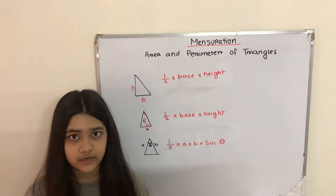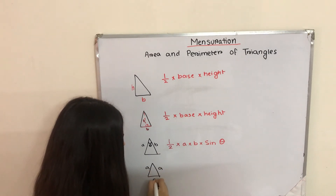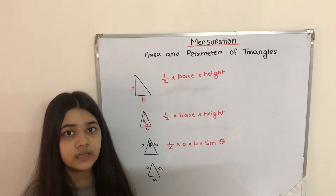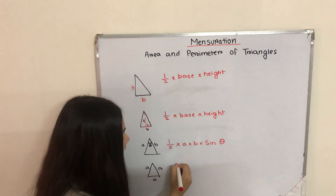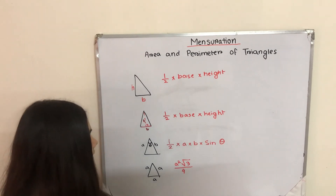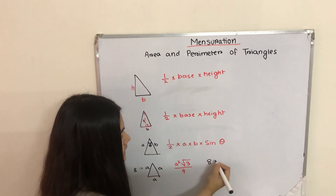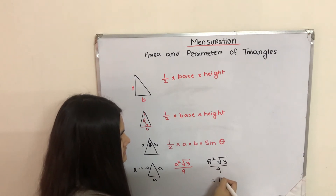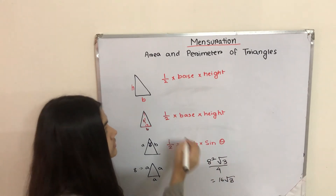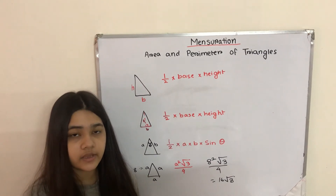Finally, if we have an equilateral triangle where the sides are a and we don't know the included angle and we don't know the height of the triangle, we need to use the formula a² × √3 divided by 4. So if a equals 8, then we substitute: 8² × √3 divided by 4 equals 16√3.